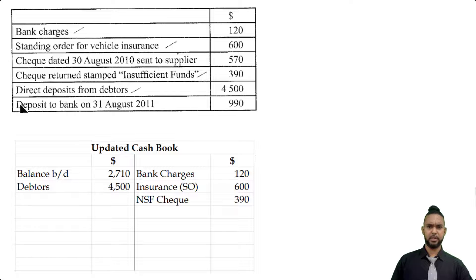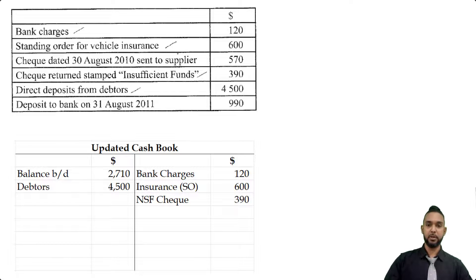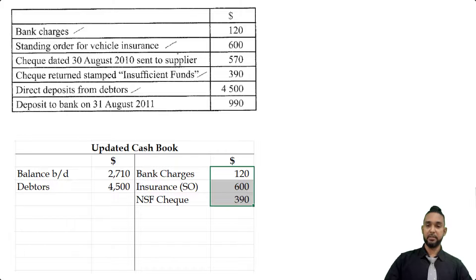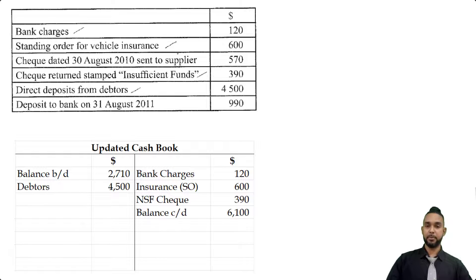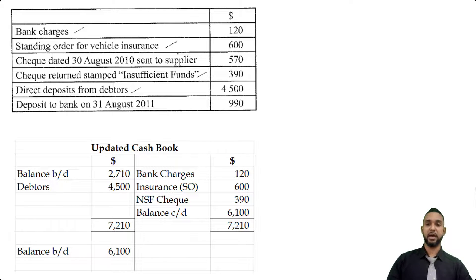We are finished populating the updated cash book. To balance it off, we add up the items on the debit side, add up the items on the credit side, find the difference — that's placed as balance carried down. Both sides now total to the same figure and the balance is brought down on the debit side.